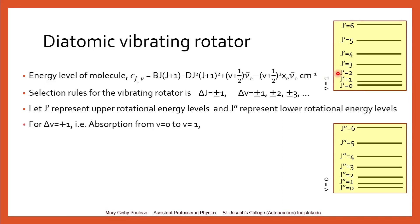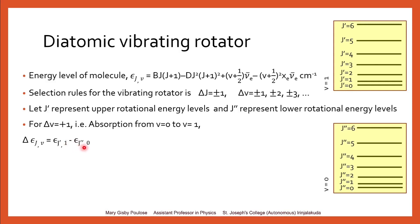In the case of absorption, Δv = +1. That is, the molecule is excited from v = 0 energy level to v = 1 state. The change in energy can be written as Δη(j,v) equal to the final level minus the initial level. So we can write η(j′, 1) − η(j″, 0).